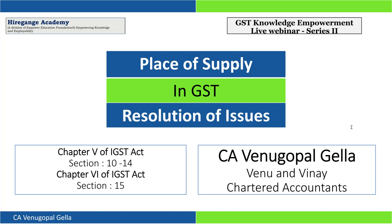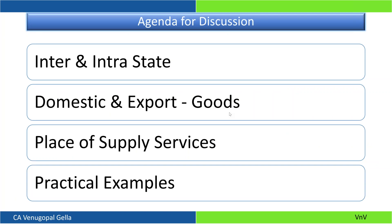Let us begin the session in understanding the need and importance of place of supply. What I am going to cover today is interstate and intrastate transactions with respect to goods — domestic transactions and exports — and with respect to services, domestic transactions and international transactions. At each slide, I will discuss practical examples, the issues that arise, and how to deal with them.